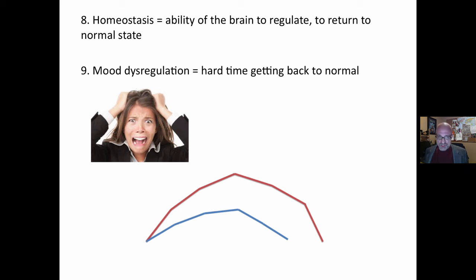People with a mood disorder feel more anger or more sadness or more surprise or more anxiety at a higher level and have a harder time getting back to normal. This is called mood dysregulation.